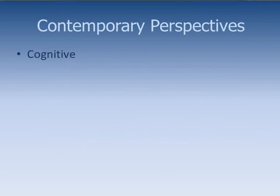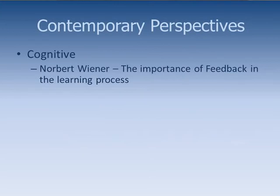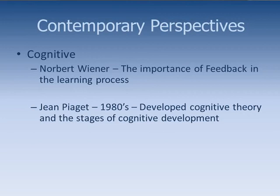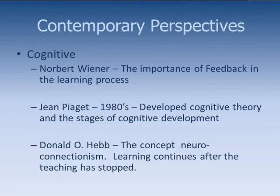The cognitive psychologist explores the process of acquiring knowledge. Norbert Wiener recognized the importance of feedback in the learning process, and we as adult learners also want to get feedback from our teachers so that we can know if we are doing it right. Jean Piaget used naturalistic observations and is considered the father of cognitive psychology. Donald O. Hebb created the concept of neural connectionism in learning. Through this process, learning continues in the individual even when he or she leaves the learning environment — the classroom or even online — as we continue to think about the material we have been introduced to.